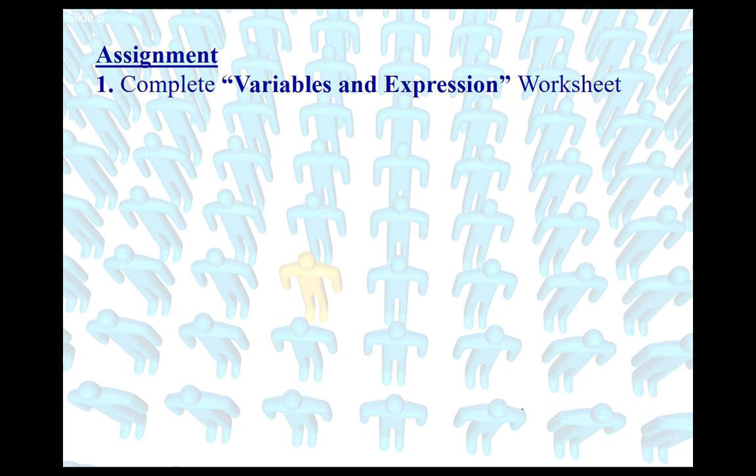That's it for this lesson. The assignment for today is not from the textbook. I'm going to post in the content section on D2L under Lesson 2: Variables and Expressions. The assignment is a chart where it gives you the expression and you need to identify the numerical coefficient, the variable, and the constant, then draw a picture with cups and counters. You're going to see that a pattern will start to emerge based on how I've set the different questions up.